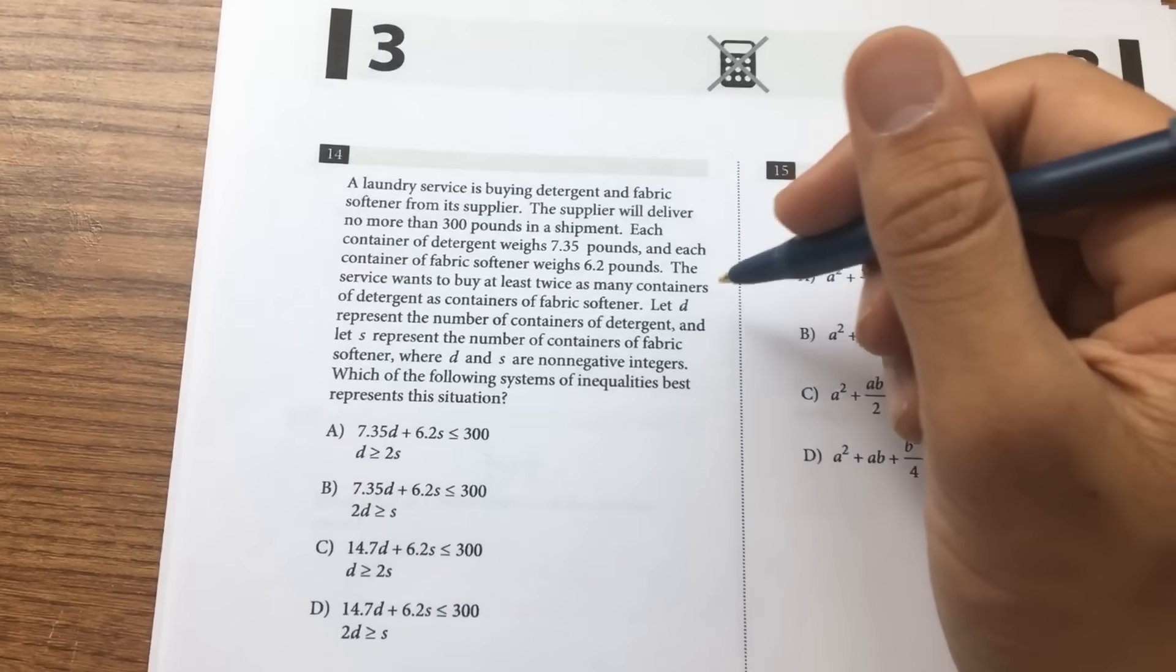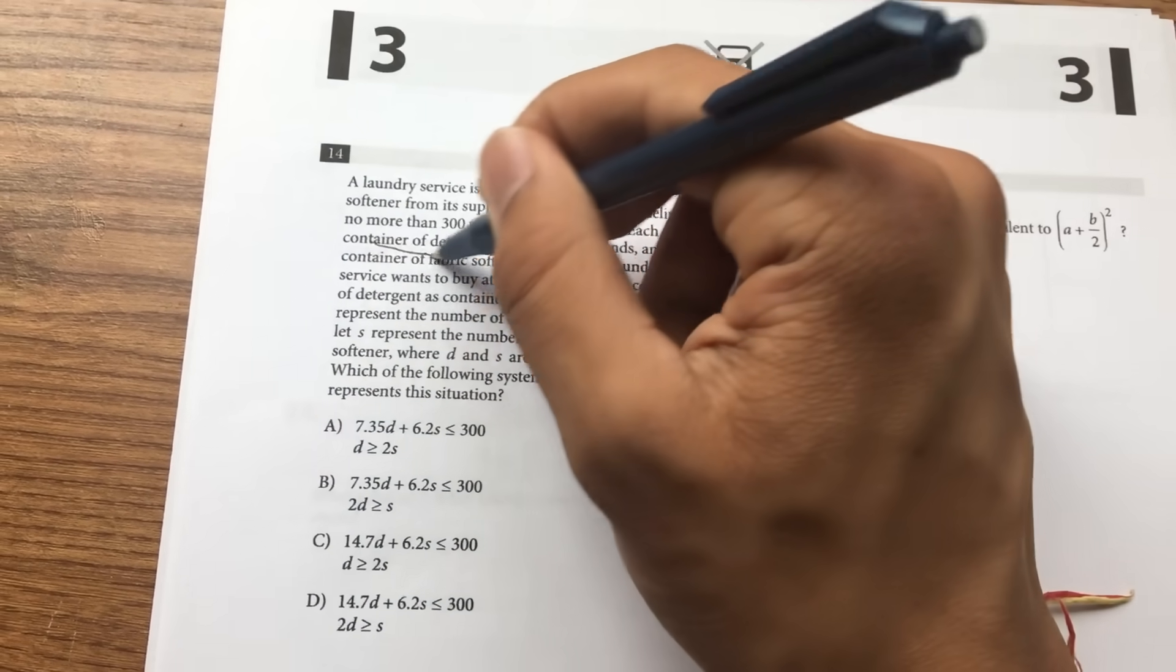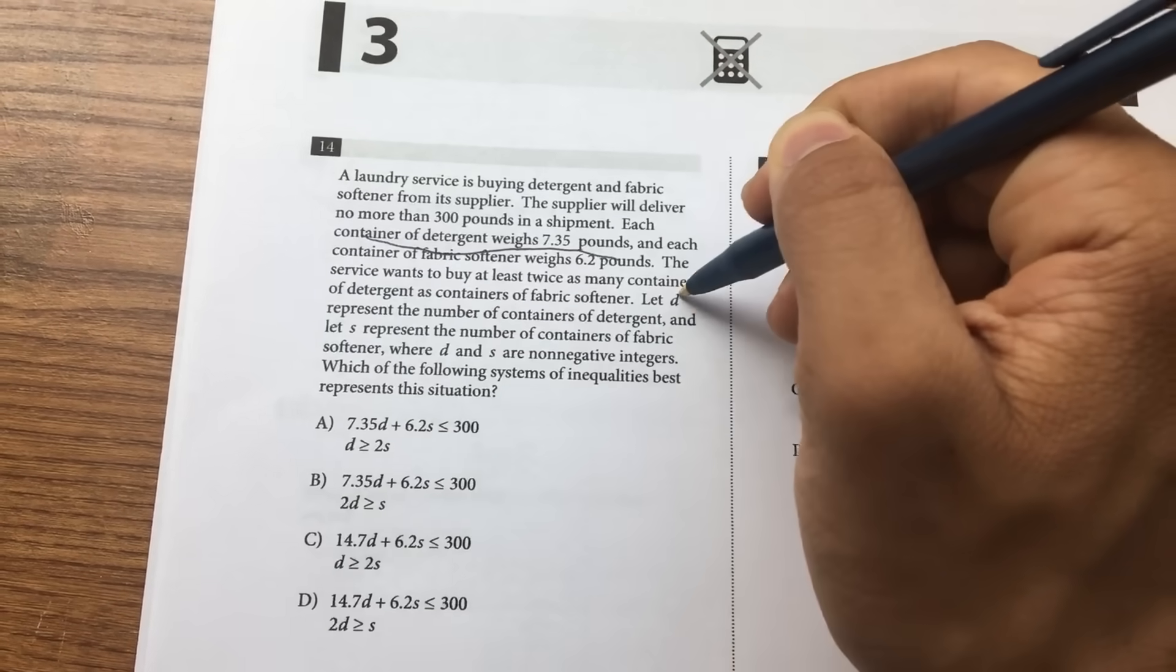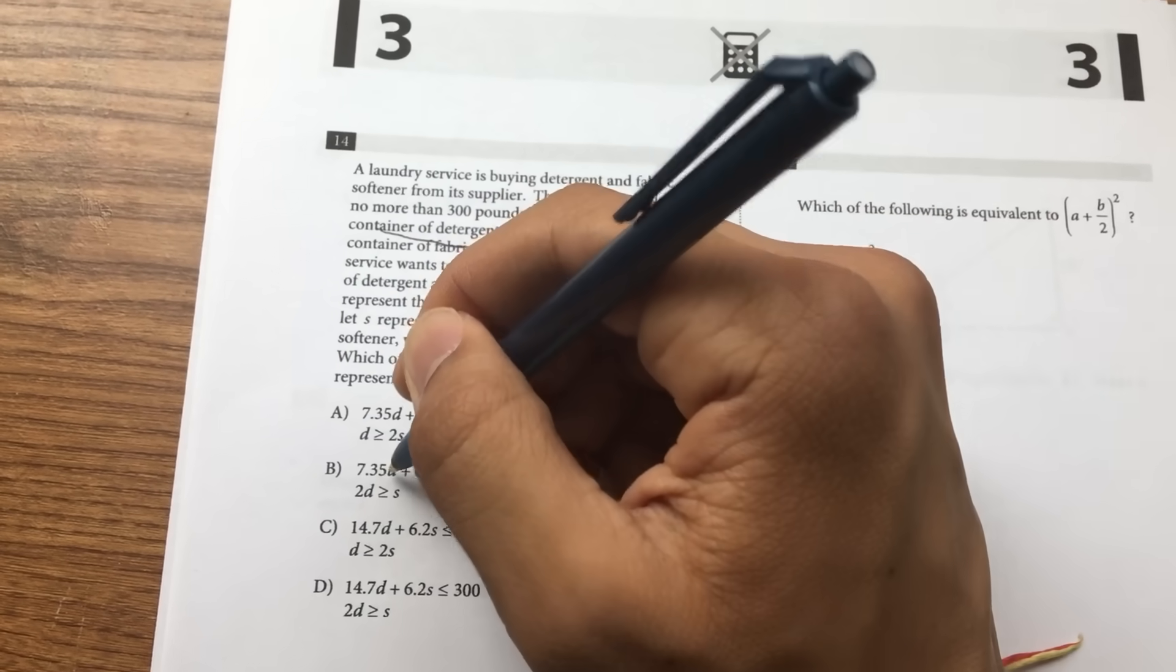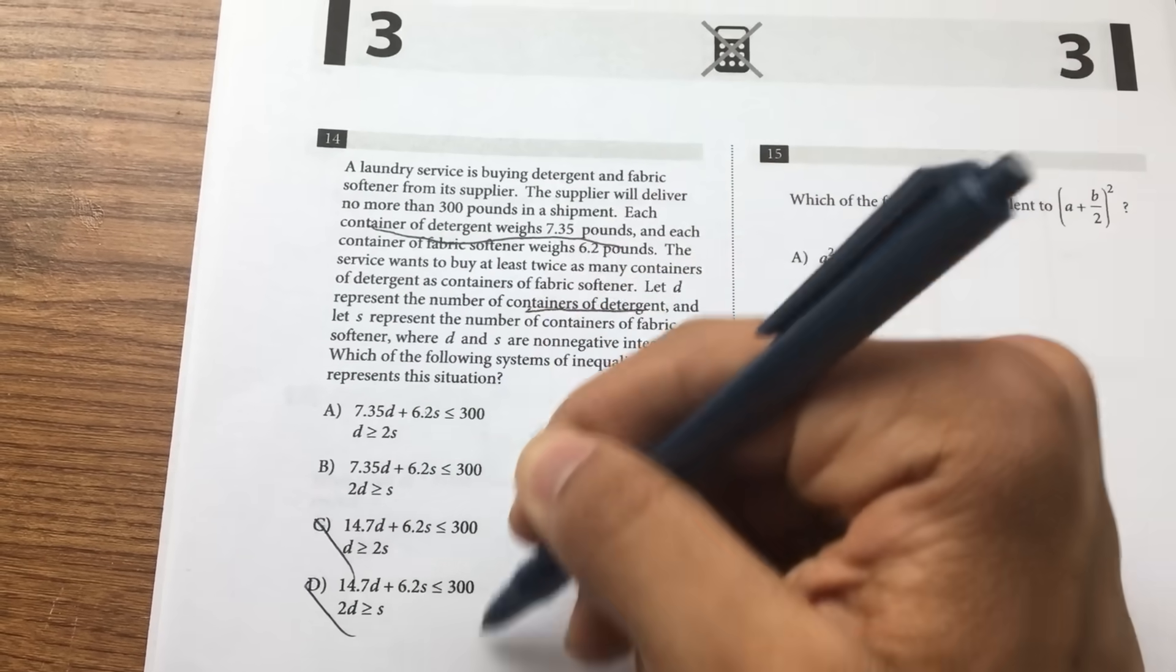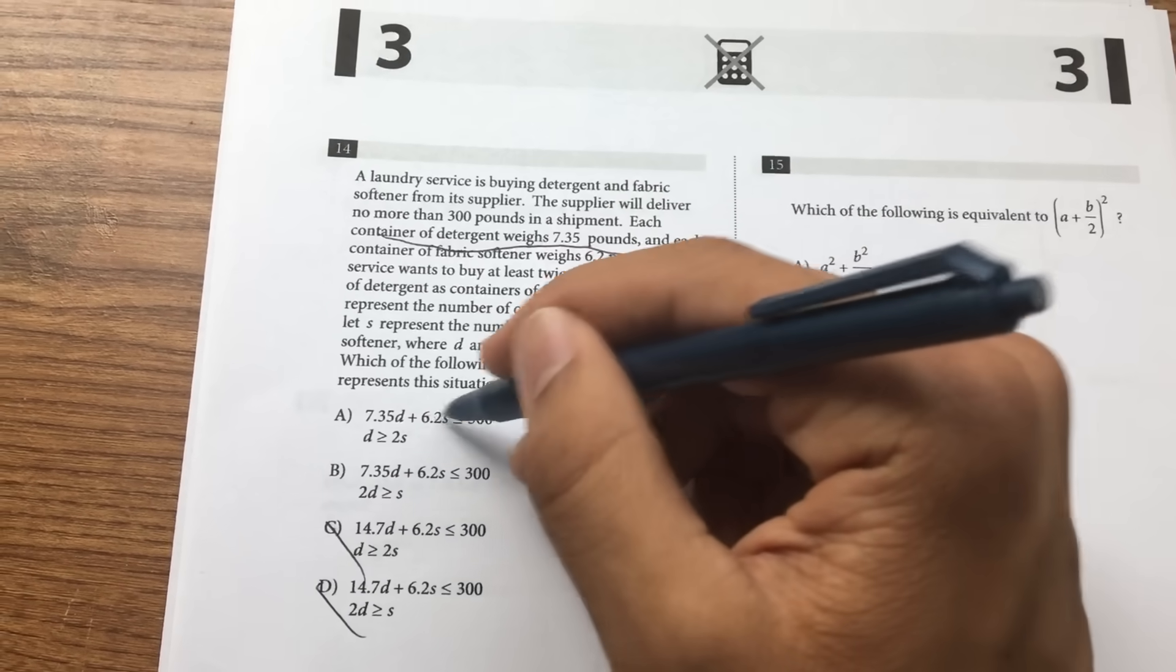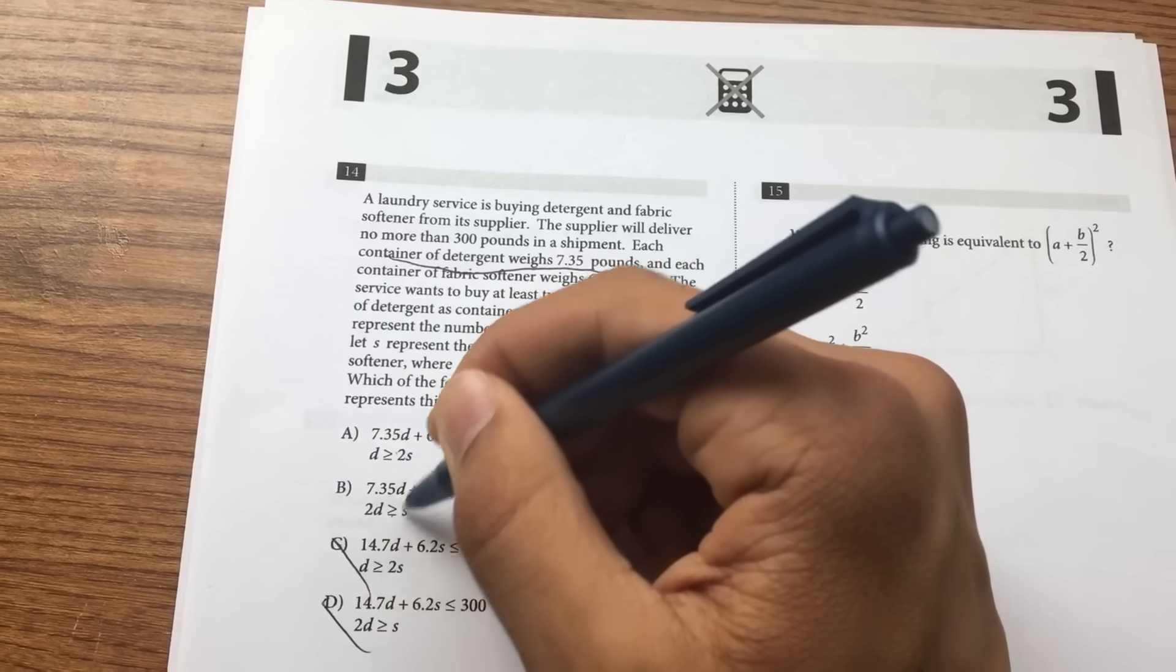Number 14, again, this is one of the questions that came up earlier. You want to match everything. Container detergent is 7.35, d represents the container detergent, so 7.35d. So it can't be this, can't be this. They all have 6.2 in common, they all have 300 in common, less than or equal to 300, so you don't pay attention to these two terms.